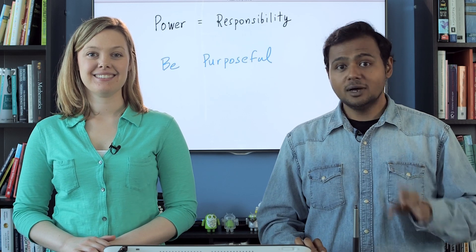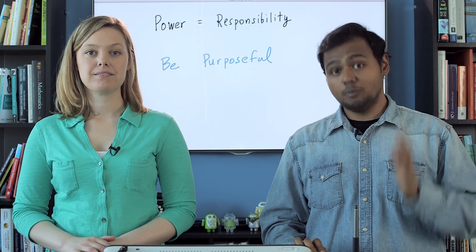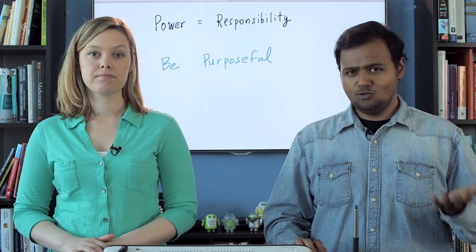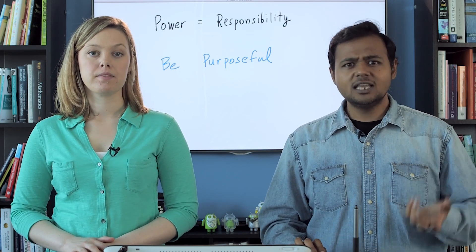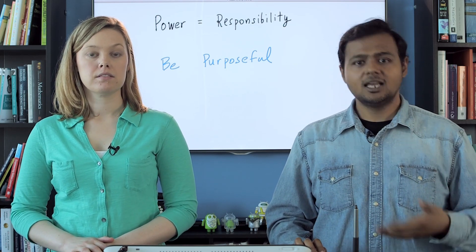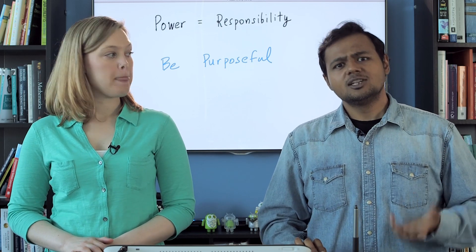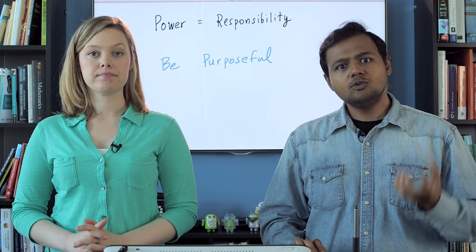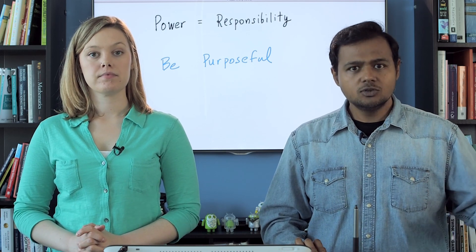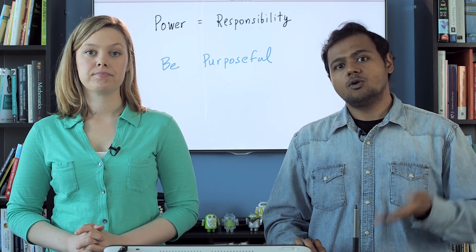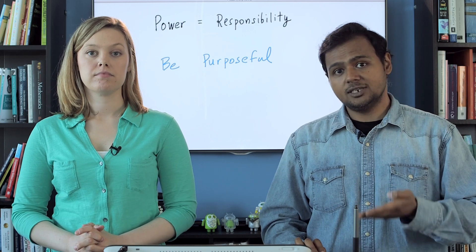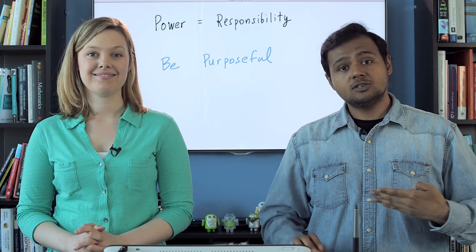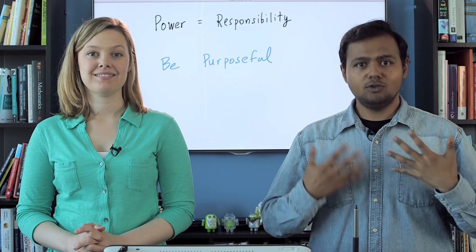The first one is: you must be purposeful. What does that mean? Just because an API exists in Google Play Services, or because there's a sensor that exists, doesn't mean that you should use it just for that reason. Being purposeful means understanding how you're going to deliver delight or some value to your user. Why does that feature or sensor need to be in your application? And if it doesn't, don't put it in there. Be restrained in how you're creative.